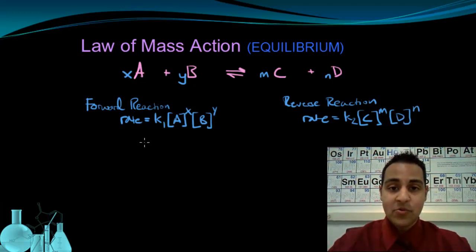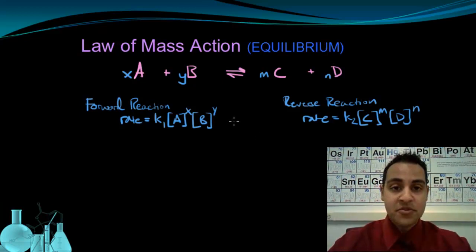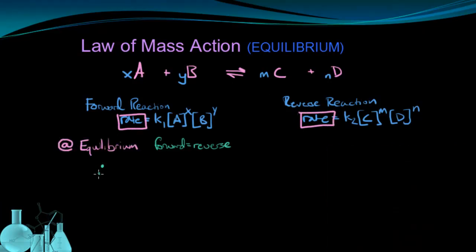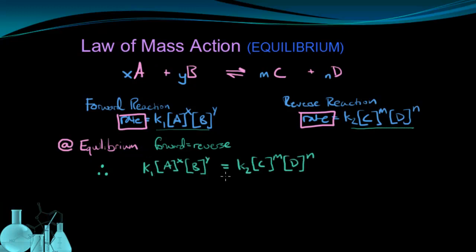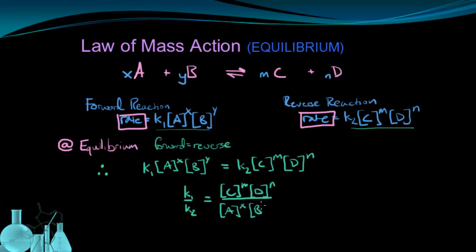Here's where equilibrium becomes pretty cool. At equilibrium, by definition, the rate of the forward reaction equals the rate of the reverse reaction. So I can set those two expressions equal to each other and use some algebra to bring the constants to one side and all the concentrations to the other. Doing K1 over K2 gives us the concentration of C to the m power times D to the n power, divided by the concentration of A to the x power times B to the y power.